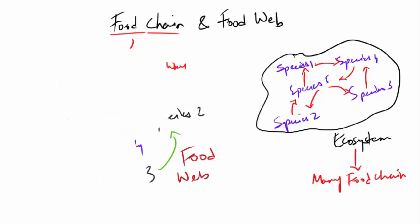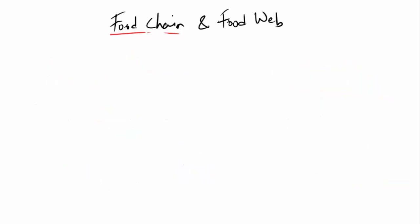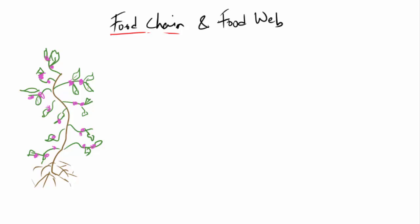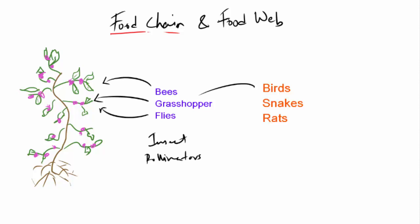Let's look at an example of a terrestrial ecosystem. There is a plant which has some flowers, and insect pollinators like bees, grasshoppers, or flies feed on these leaves and flowers. Many species of birds, snakes, and rats like to eat these flies and grasshoppers — so this forms one kind of a food chain.